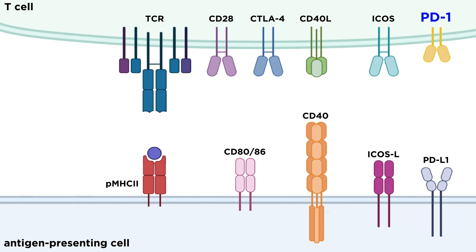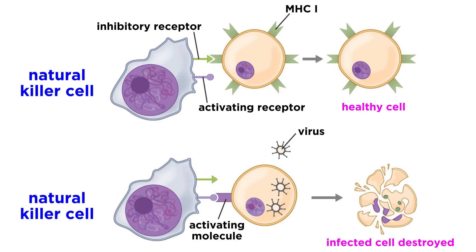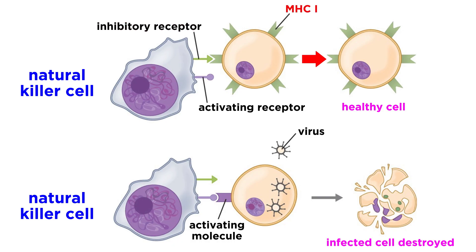PD-1 is another important inhibitory receptor expressed on activated immune cells, especially T cells, that binds to PD-L1 or PD-L2, which are expressed on a variety of cell types, including cancer cells. When PD-1 on activated T cells binds, it can promote T cell apoptosis. Inhibitory receptors are also important for regulating natural killer cell activity. Natural killer cells are not antigen-specific, but become activated through a balance of activating receptors, which can bind to PAMPs and DAMPs, and inhibitory receptors, which bind to surface proteins common on healthy self-cells — preventing the natural killer cells from killing healthy cells.